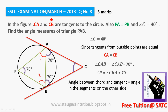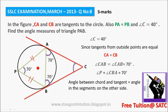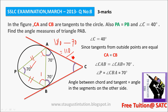PA is equal to PB, so triangle PAB is an isosceles triangle. The sum of three angles is 180. So 180 minus 70 is equal to 110. We divide 110 by 2, which gives 55 degrees. So this angle is 55 degrees and this one is also 55 degrees, because it is an isosceles triangle.